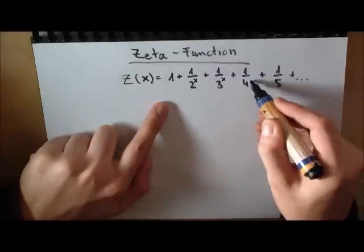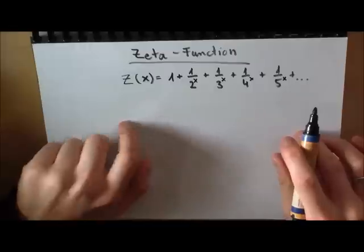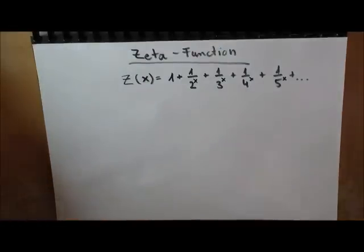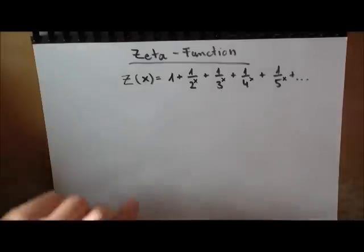Now what does this give us? It doesn't give us a lot until now. We just look at this—it looks interesting. So we add 1 plus 1 over 2 to the X plus 1 over 3 to the X plus 1 over 4 to the X plus 1 over 5 to the X and so forth.